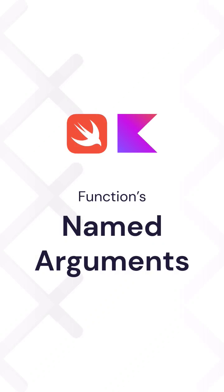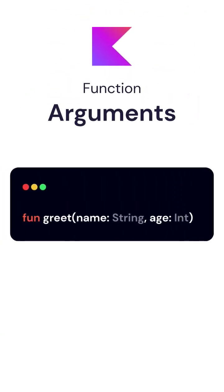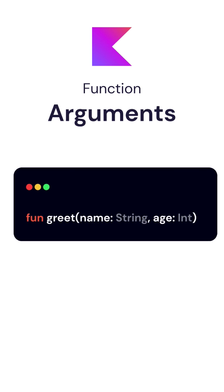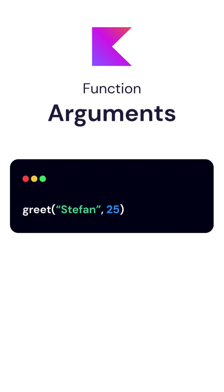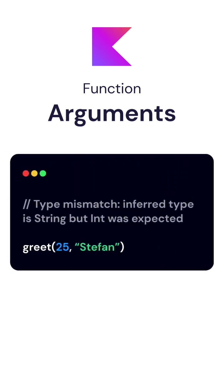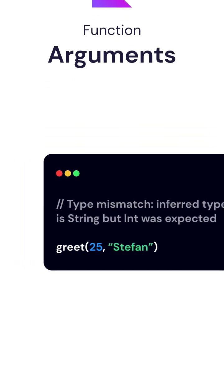When declaring function parameters in Kotlin, we can specify a name and a type. When calling that function, we can specify arguments even without adding a parameter name because the name will be omitted. However, if you don't add an argument name, then you need to pass parameters in the same order as they are declared in the function definition. Otherwise, you will get a compile time error.